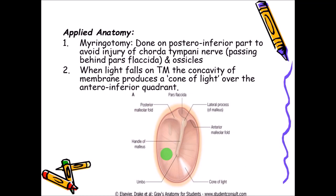When examining the tympanic membrane, the ear must be pulled upwards, backwards, and laterally, and when a torch is shone, the concavity of the membrane produces a cone of light over the anterior inferior quadrant. This cone of light, seen due to the convexity of the membrane, is a normal clinical finding in examination of the tympanic membrane.